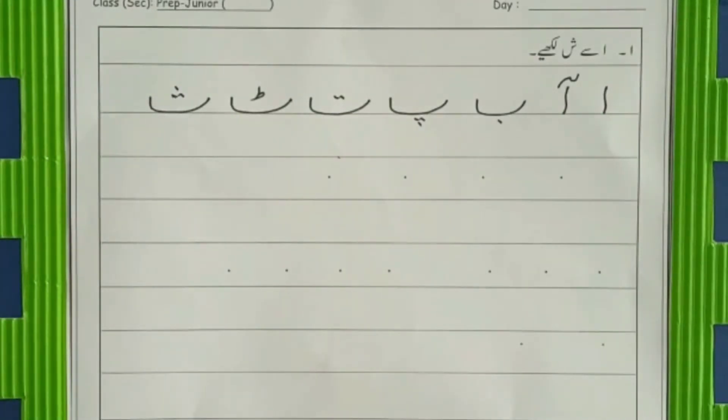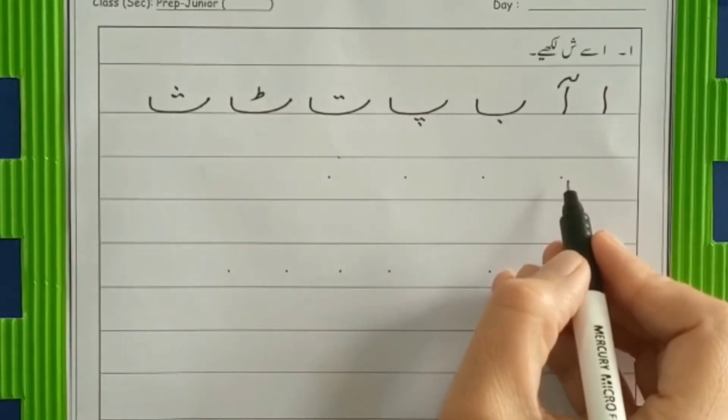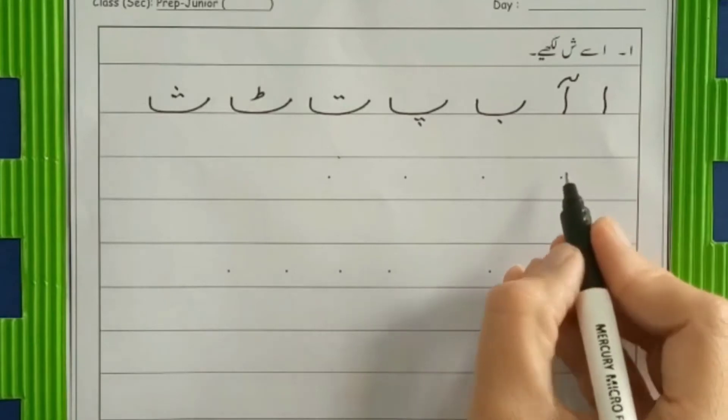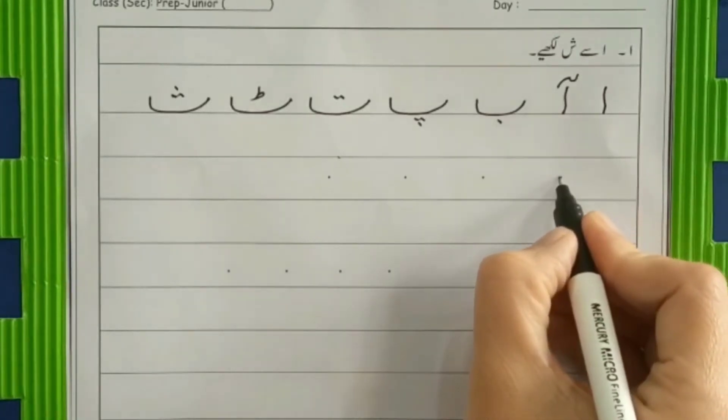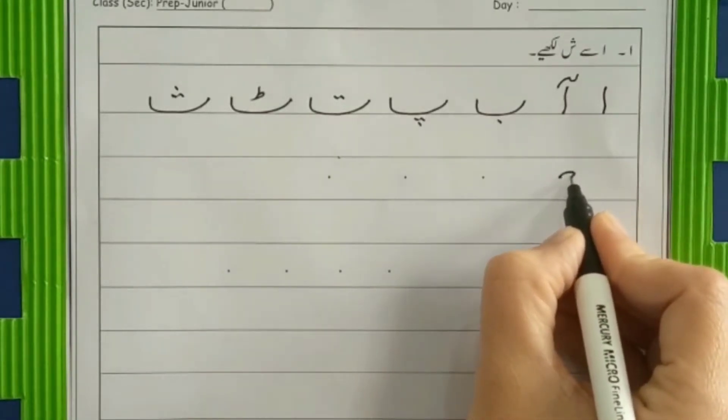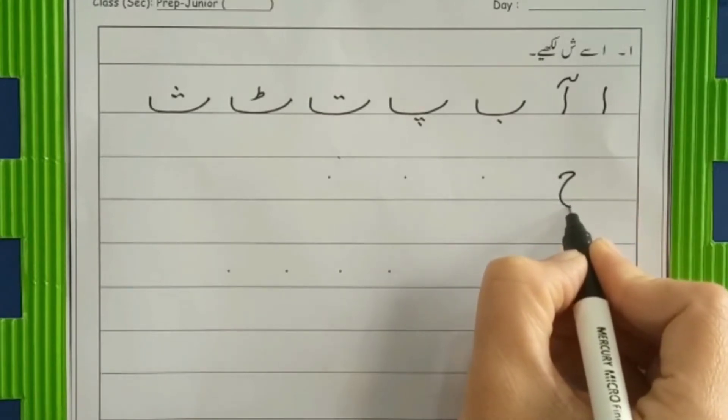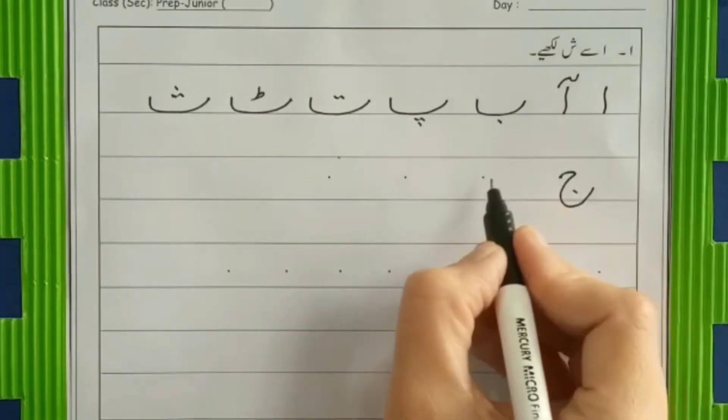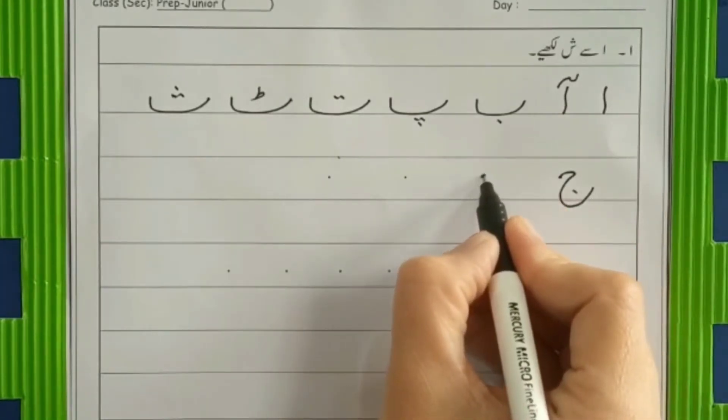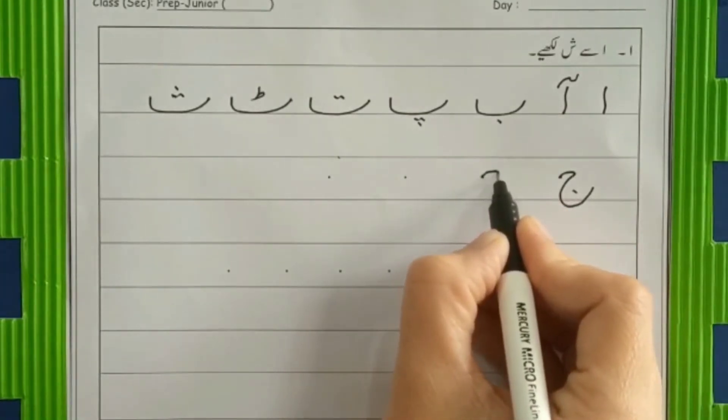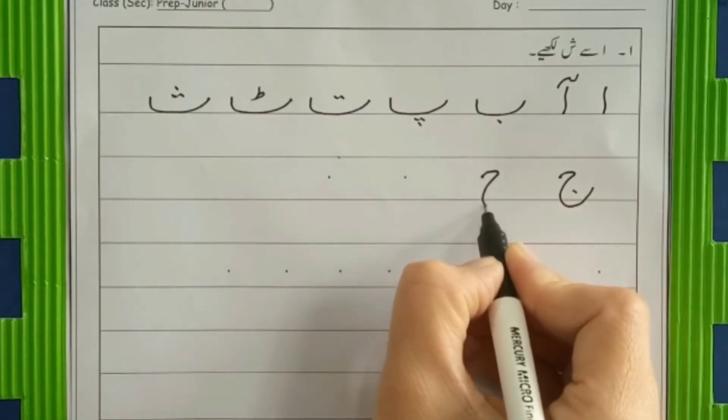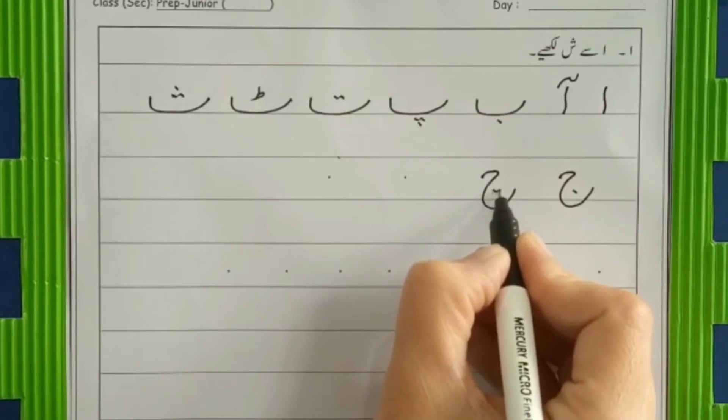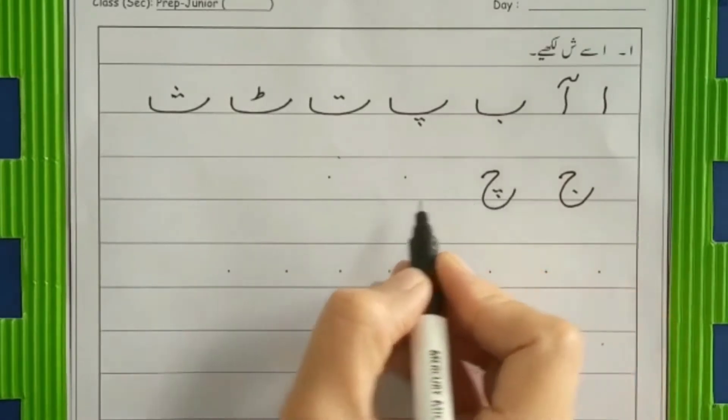Now we are going to write jeem family. Jeem pe jaldi jaldi ek roti kai ti. Yes, you are right. So go up slant, make a head, calm down slant and make a big belly. Keep one dot in it. Then chee. Again make a head, calm down slant, make its big belly and three dots inside.